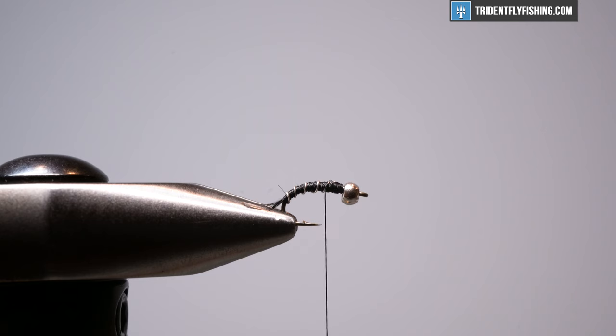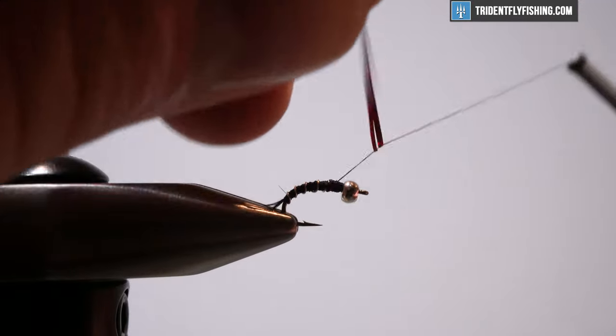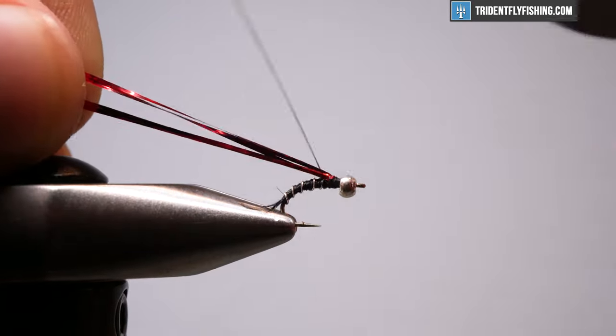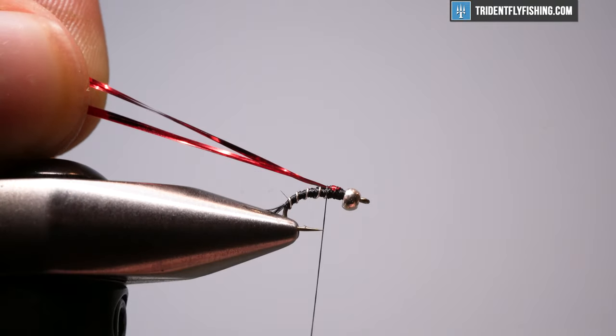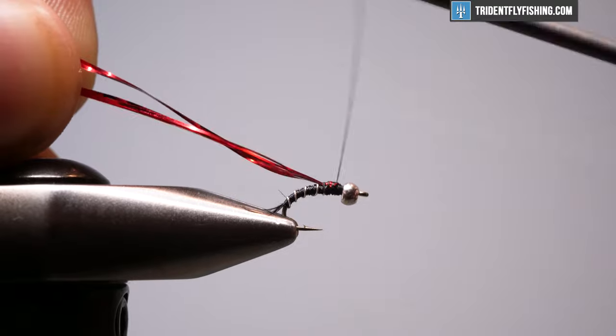So the original pattern calls for floss. I don't like to use floss on this for a wing case. And I'll show you the reason why at the end. So holographic tinsel, some flash, whatever you have. I'm going to use some flashabou. A couple of strands doubled over. And I'm just going to tie that right in on top. For a thorax here, our tie-in point is going to be about the hook point. That looks about right.